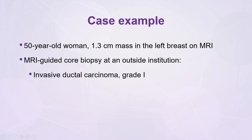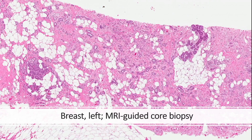This was from a 50-year-old woman with a breast mass detected on MRI. The patient had an MRI-guided core biopsy at an outside institution with a diagnosis of invasive carcinoma, well differentiated. The patient came to our center for treatment. This is the MRI-guided core biopsy of the lesion. I will show you several images at different magnifications — give you a moment to review and come up with your diagnosis or differential diagnosis.